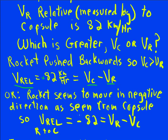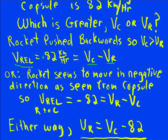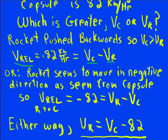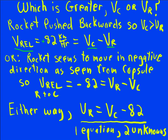If you like, you can make it be negative 82, then it's Vr minus Vc. Those are equivalent equations. I prefer to set it up as positive. But either way, you find out that the rocket's velocity is the capsule's velocity minus 82 kilometers per hour. So we have one equation, but we have two unknowns.